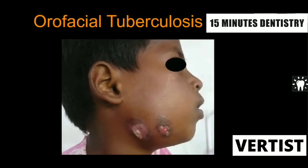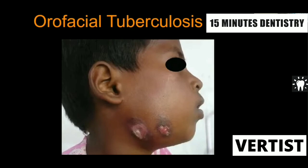Tuberculosis, after pulmonary involvement of the lungs, most commonly involves the lymph nodes, and after that the jaw bones — particularly the mandible — are very commonly involved, especially in children. You have to proceed with investigations for tuberculosis including sputum examination, chest radiograph, and other tests, and start patients on anti-tuberculosis therapy, which we call ATT. You should know what ATT means.